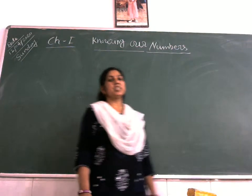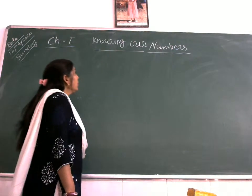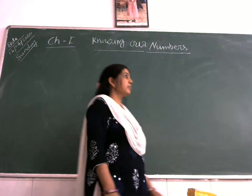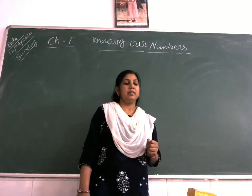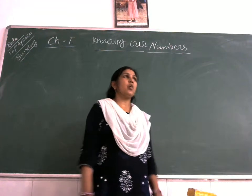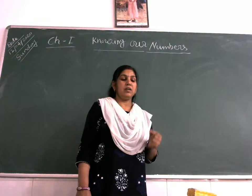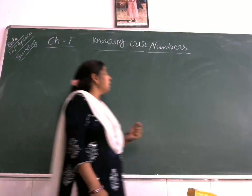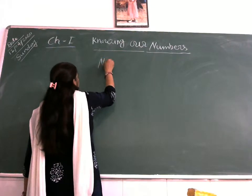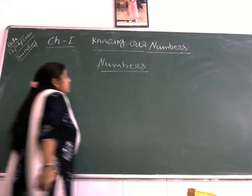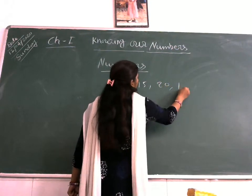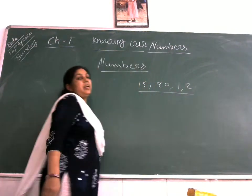Hello students, today I am going to discuss Chapter 1: Knowing Our Numbers. So what are numbers? Numbers means how much of anything. Suppose you visit a market and buy something — like 10 chocolates, 5 kg potato, 10 kg tomato. All these counts — 5, 10, 20, one, two — all counting is called numbers.